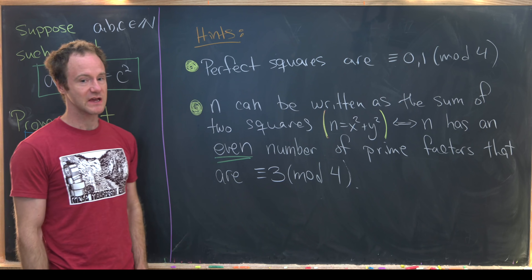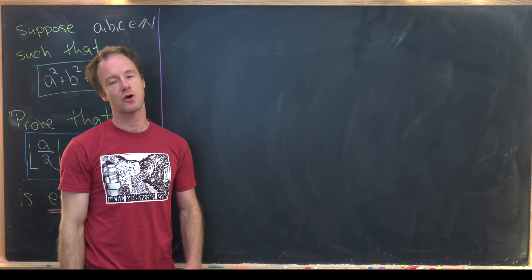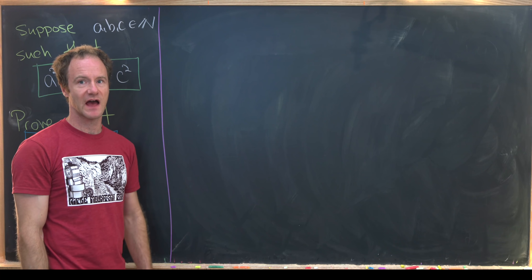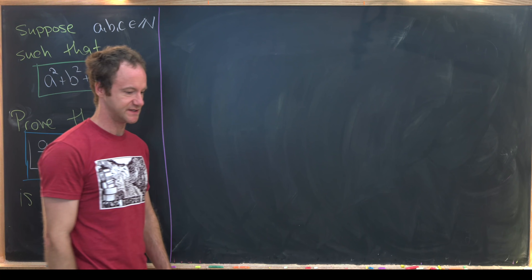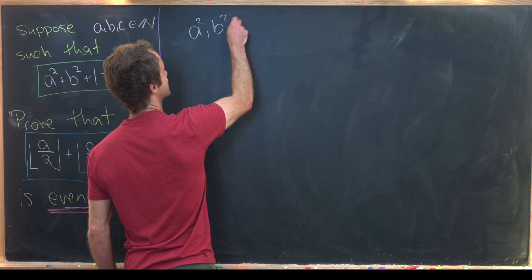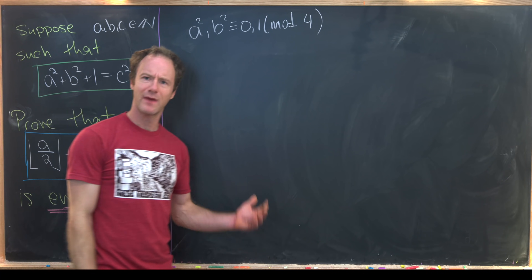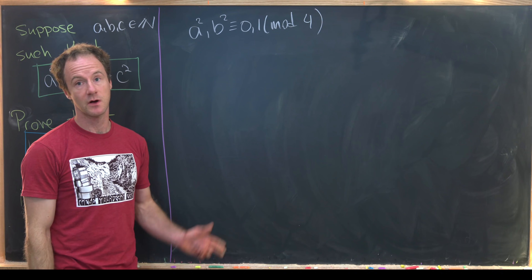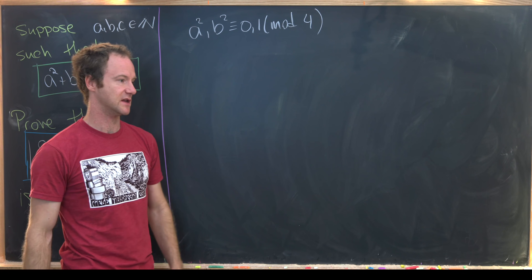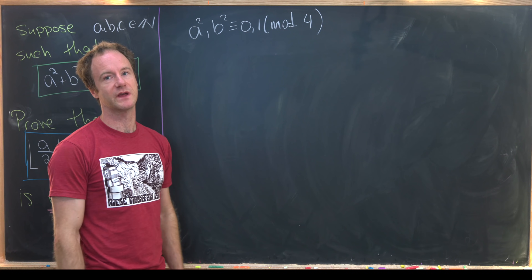Now we're going to look at the solution. Starting with the fact that perfect squares are congruent to zero or one mod four, that tells us that a squared and b squared are each congruent to zero or one mod four. They may not be congruent to each other though — one could be zero and the other one mod four depending on the setup.